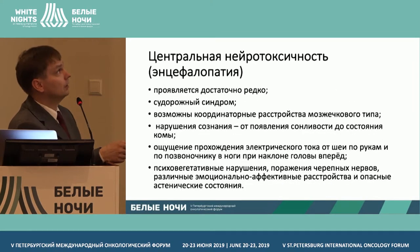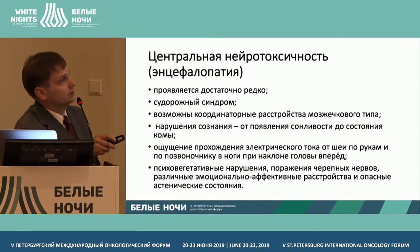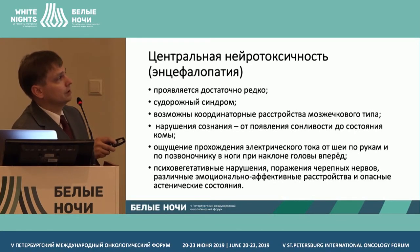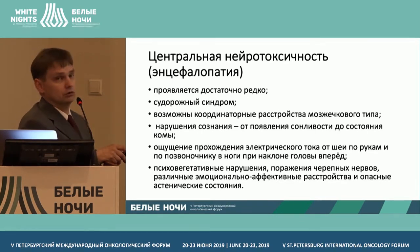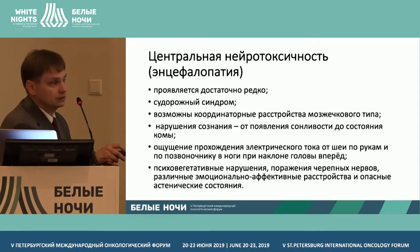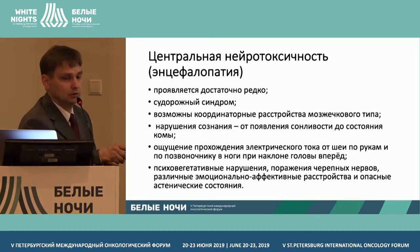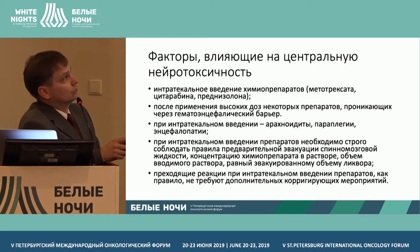Vegetative disruption is what we usually see in diabetes. Encephalopathy happens not that often, and it is related to convulsive syndrome, disruption in consciousness, and coordination disruptions. It can be very different depending on the state of the patient and can cause even coma, more than feelings of electricity coming through the body, as well as psycho-vegetative disruptions and affective disruptions.